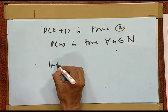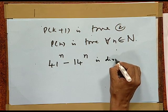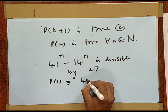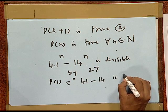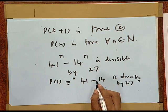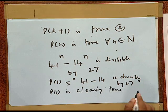Suppose we have to prove that 41 raised to the power n minus 14 raised to the power n is divisible by 27. As before, first we check the result for n equal to 1. P(1) stands for 41 minus 14 is divisible by 27, which is obviously true because the number itself is 27. So P(1) is clearly true. For the second step, we have to play a slight trick.